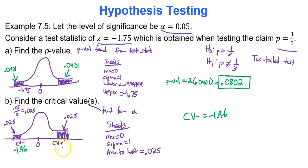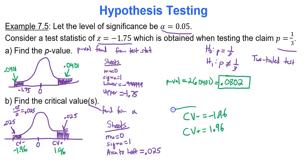Because of symmetry, the positive critical value is positive 1.96. Two-tailed tests have a positive and a negative critical value — that's what separates the rejection region, or critical region, from the rest of the bell curve.